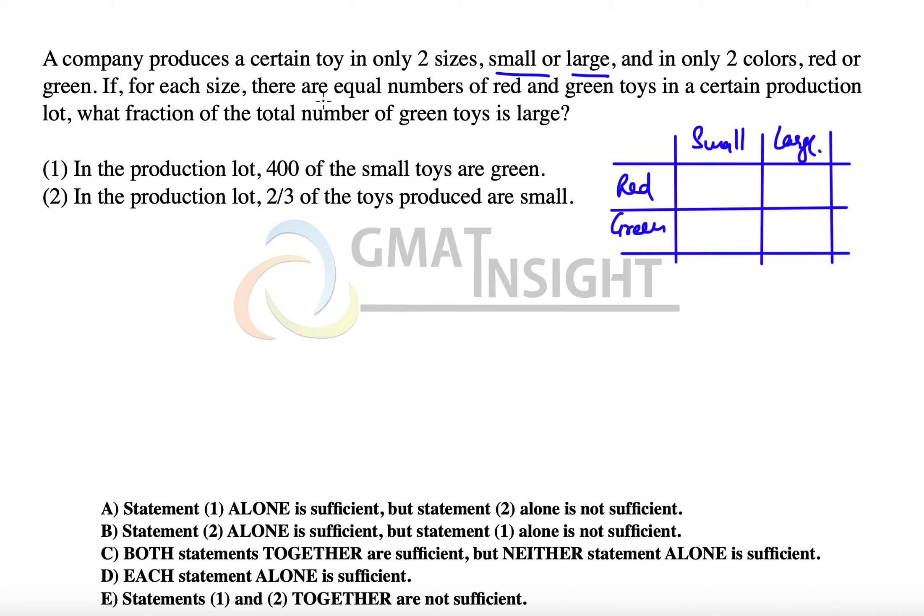The question says if for each size there are equal numbers of red and green toys in a certain production lot, so for the small, if we have x red,